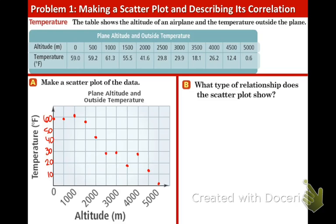Part B says, what type of relationship does the scatter plot show? Well, as I mentioned before, the temperature outside the plane tends to decrease as the altitude of the plane increases. So you can see that the points are generally going down. That reminds you of a negative slope. So that means we have a negative correlation.